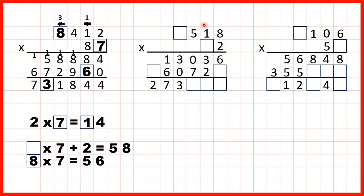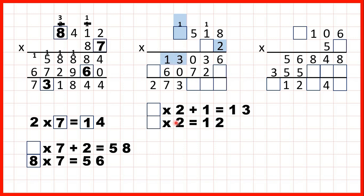So now, 8 times 2 is 16, so 1, 6. 1 times 2 is 2, plus 1 is 3. 5 times 2 is 10, so that's 1, 0. And now we have something times 2 plus 1 is 13. So before they added the 1, they must have done something times 2 to get 12, and we know that 6 times 2 is 12, so 6 must be our missing digit. 6 times 2 is 12, plus 1 is 13. Now we can cross out our working, and we know that the last digit of a second answer line is always a 0.